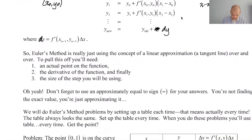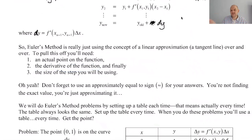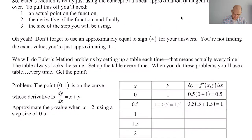To actually implement this, you need a couple of things: an actual point on the function, the derivative of the function, and the step size or how many steps you're going to use. Those are all key. The only other caveat — and it's a big one — is you must use approximately equal to for your solution, because you're approximating the value.